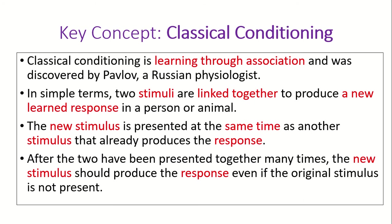It can happen with something like a lift or it could happen with something like a phobia, which we're going to have a look at in a minute. In simple terms, it's learning to associate something that already produces a response with something that doesn't produce a response, and then they become associated together. It is quite complicated but hopefully the next couple of examples will help you to understand it a little bit better.